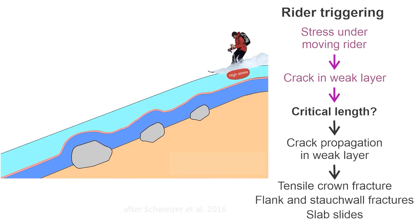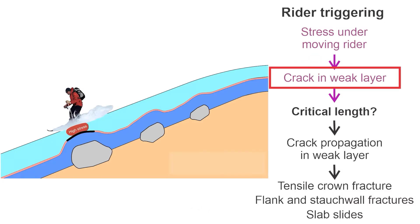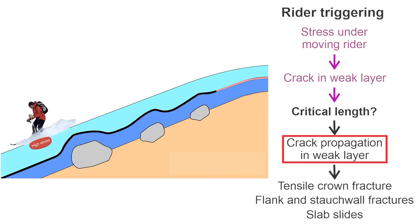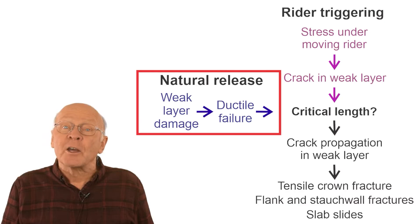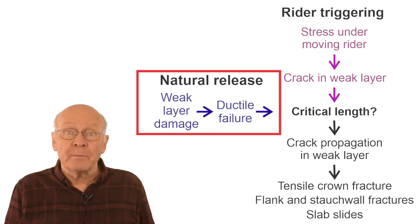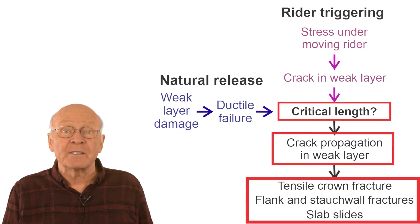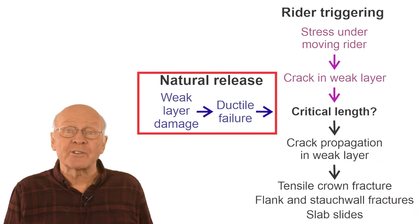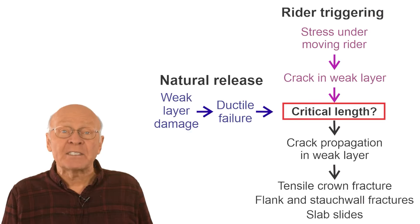Here are the stages we'll use in this video: stress under the moving rider cracks the weak layer; if the crack is longer than the critical crack length, the crack propagates in the weak layer; the crown and other boundaries of the slab fracture, releasing the slab. The first stages of natural avalanche release are different, but once the crack or initial failure reaches the critical length, the latter stages are the same. Research suggests the critical crack length can range from less than a slab thickness to perhaps 10 times the slab thickness.